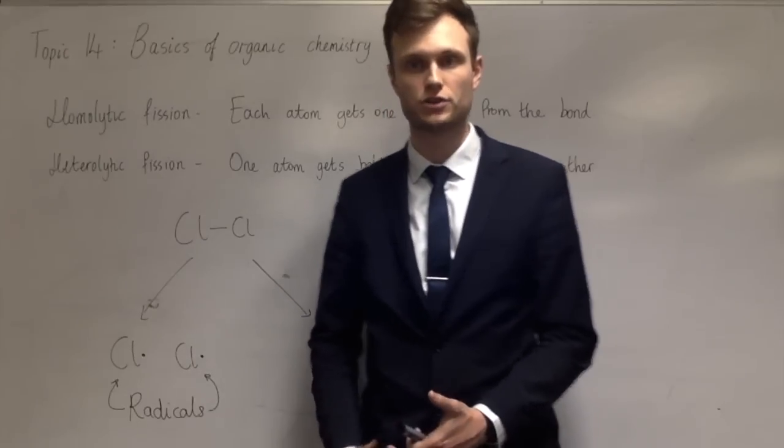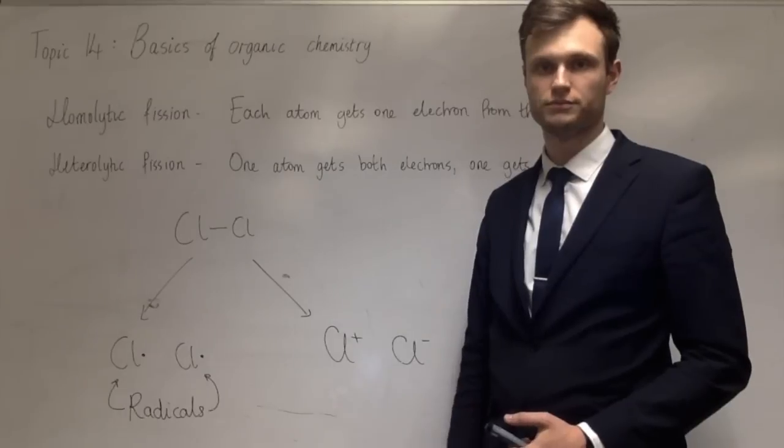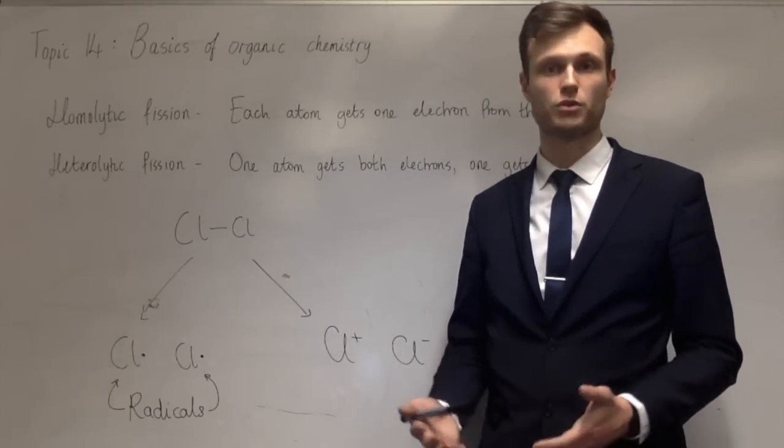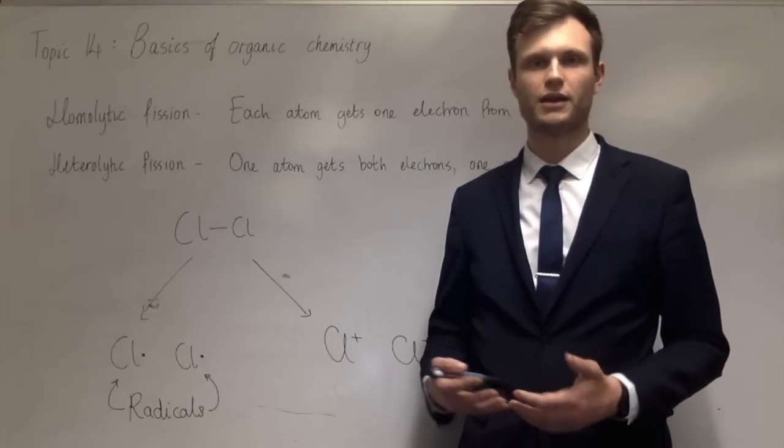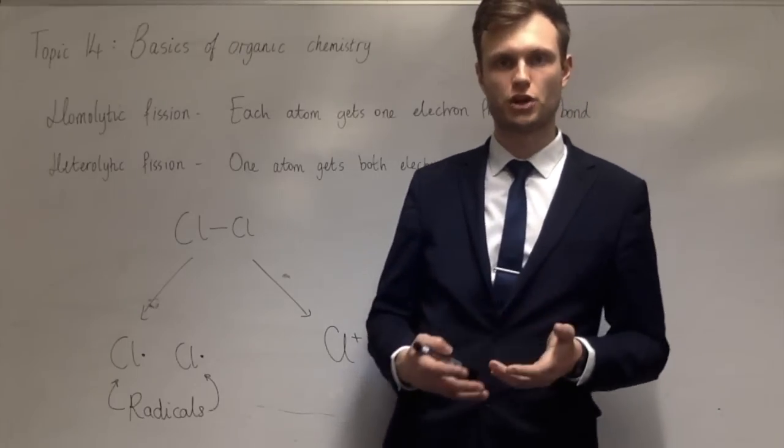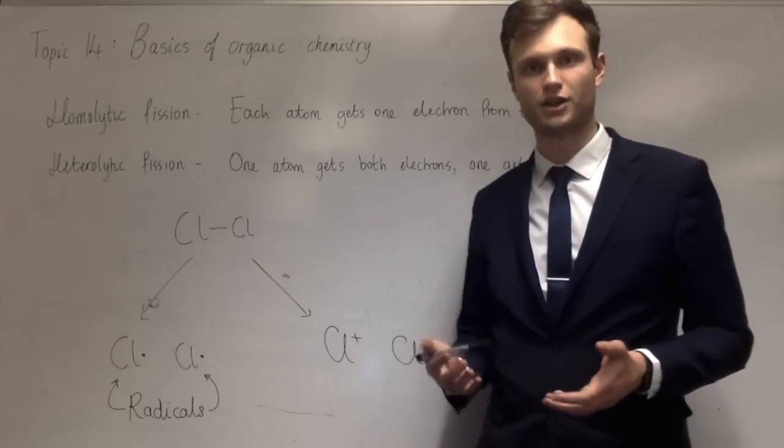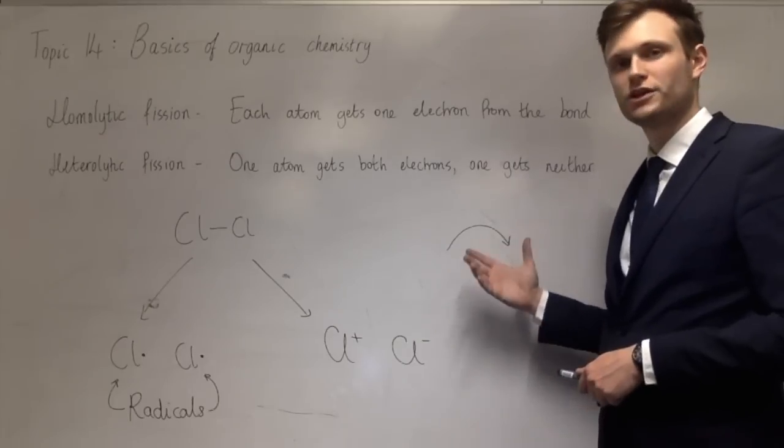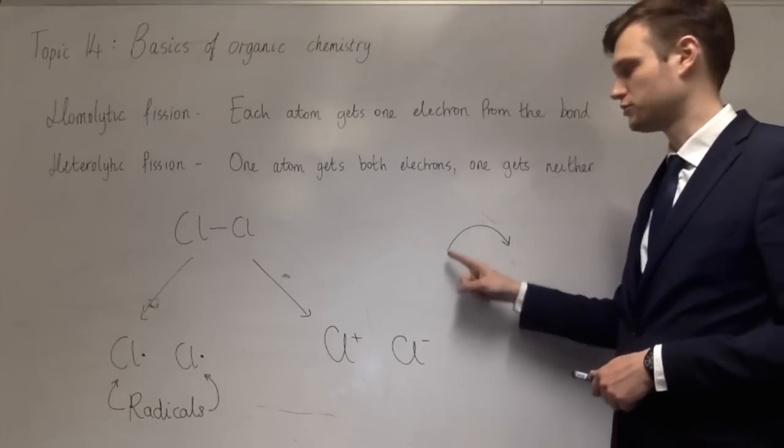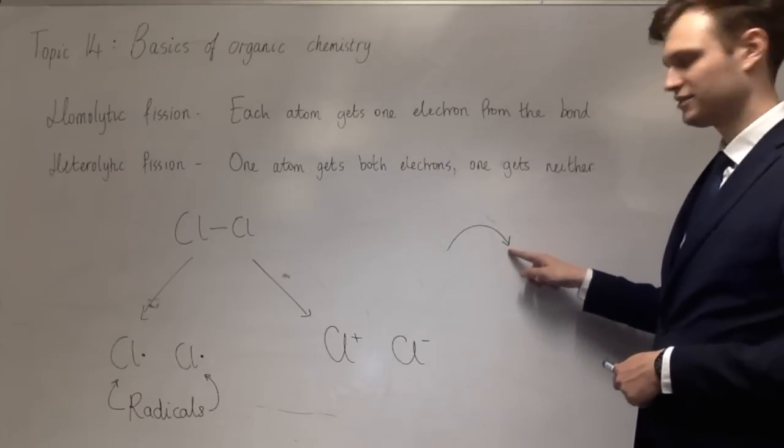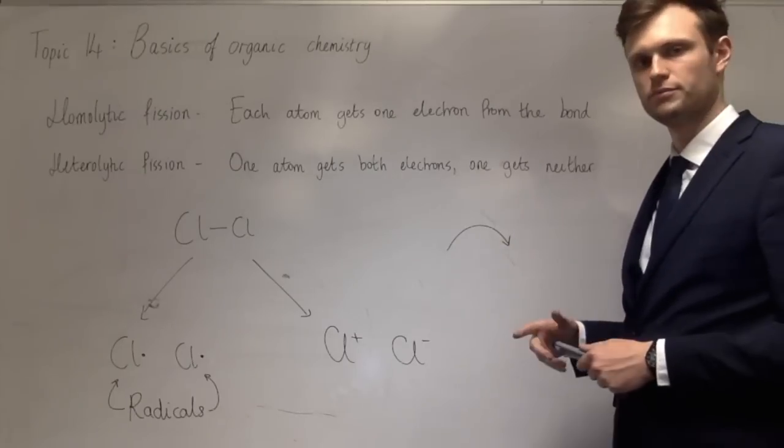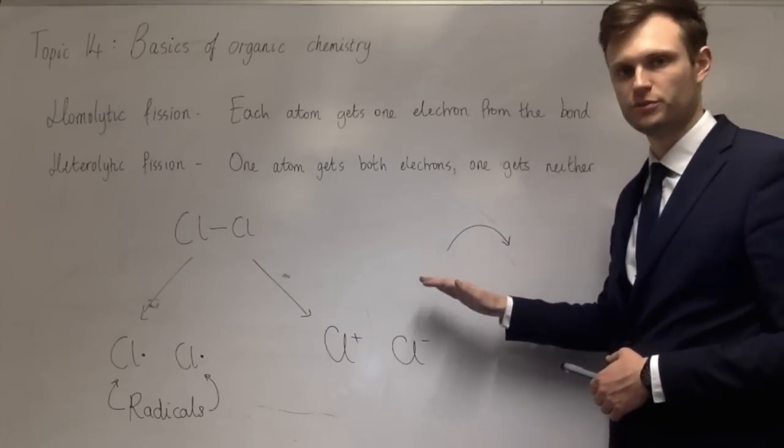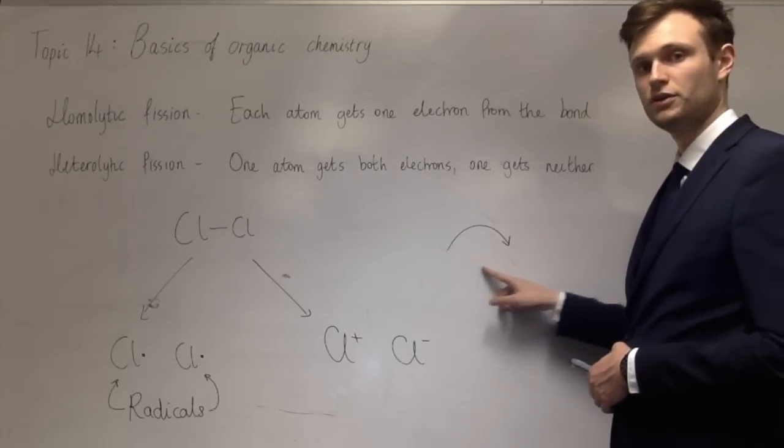The other thing that can happen is making bonds. Both of those have a way of being drawn in what's called a mechanism, which shows how the bonds break and how the bonds are made in a chemical reaction. The way that that's shown is with what's called a curly arrow. A curly arrow looks like this. I wouldn't call that curly myself, it's more just bendy. But it's called a curly arrow. A curly arrow shows the movement of two electrons. Be very careful that this side has to have a double-headed arrow, not just a single-headed arrow. A curly arrow shows the movement of two electrons, from this side of the arrow to this side of the arrow. And it either represents a bond being made or a bond being broken.